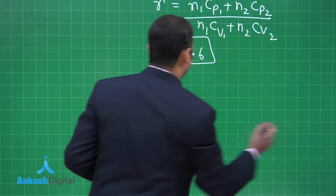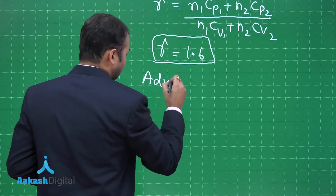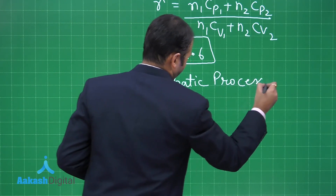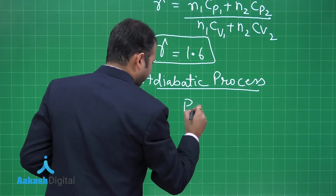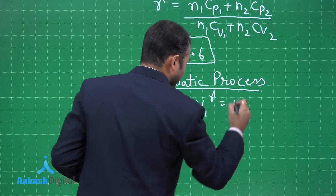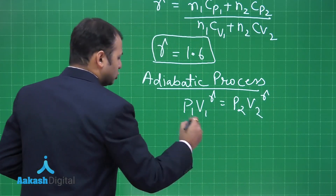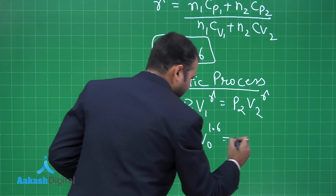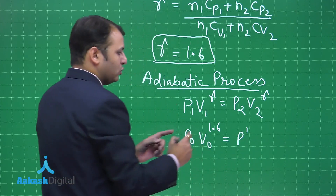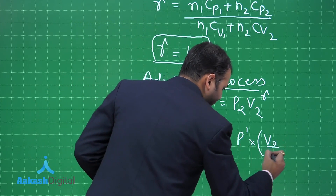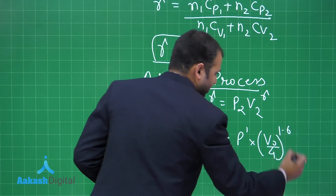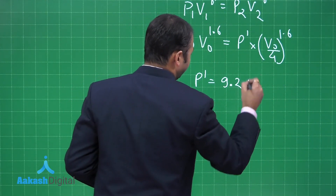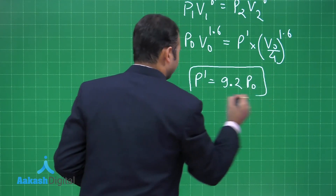For an adiabatic process, P₁V₁^γ = P₂V₂^γ. So P₀·V₀^1.6 = P′·(V₀/4)^1.6. Solving this equation gives P′ = 9.2·P₀, so we have the final pressure.